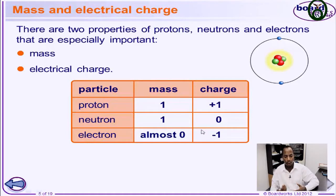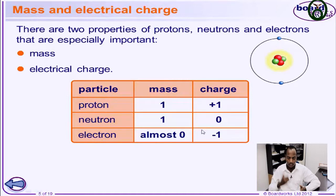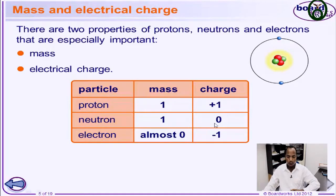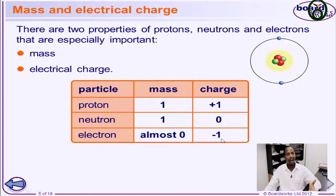The protons and the neutrons have a mass of 1. The proton is positively charged and is found in the nucleus of the atom. The neutron has a mass of 1 but has no charge. The electron has a mass of almost zero but it is negatively charged and revolves around the nucleus.